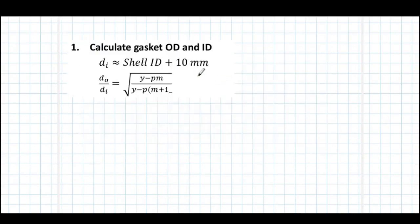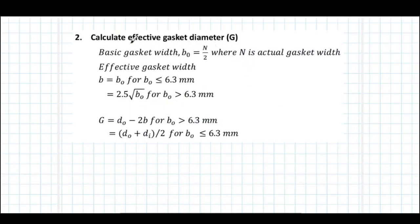The first step in the flange design is to determine the gasket outside and inside diameters. The inside diameter and outside diameter are calculated using the expressions as shown on the screen. The second step is to calculate the effective gasket diameter g — this is the location where the gasket reaction is supposed to be acting and contributing towards the flange moment. For this purpose, first the basic gasket width b0 is calculated, next the effective gasket width b is calculated, and then the effective gasket diameter g is calculated based on the value of b and the gasket outside diameter.